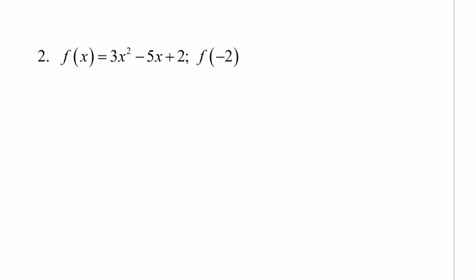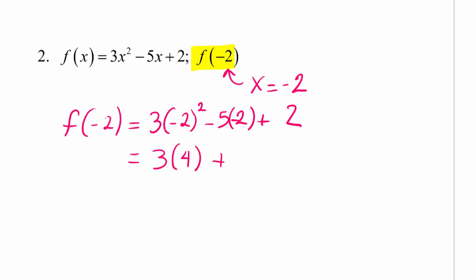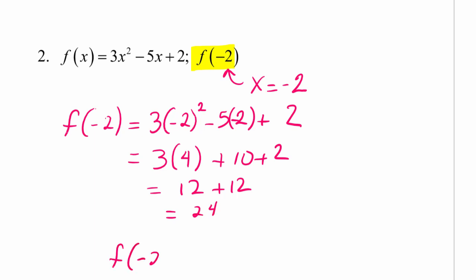We're asked to evaluate f of negative 2. So x equals negative 2 is our input value. Finding f of negative 2 means we replace x with negative 2 in the function and find the range value, or y value, that corresponds to negative 2. Using our order of operations, we get f of negative 2 equals 24.